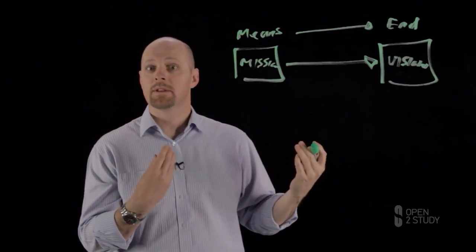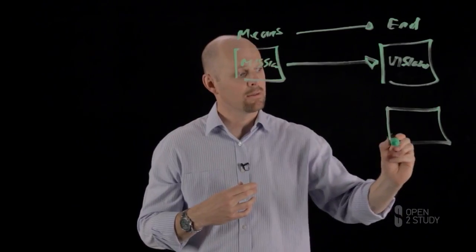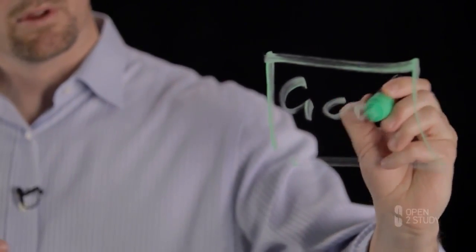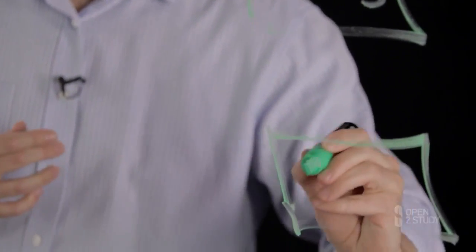Now the way the means-to-an-end chain works is this actually decomposes even further. Coming out of the vision, I have a series of goals, and coming out of the goals, I break that down into a series of objectives.